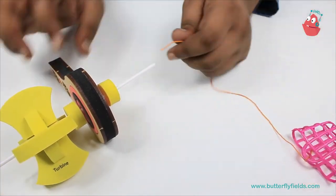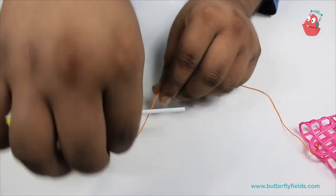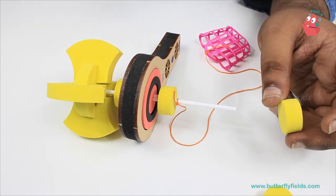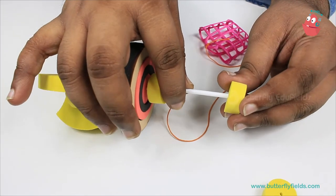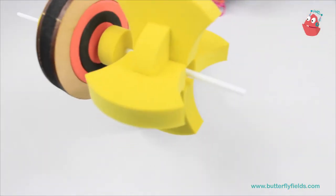Tie the other end onto this straw and close the other end with another piece. Now your turbine is ready. Let's go to the water now.